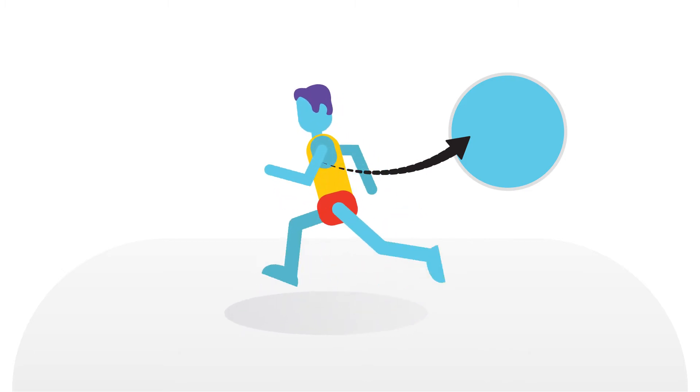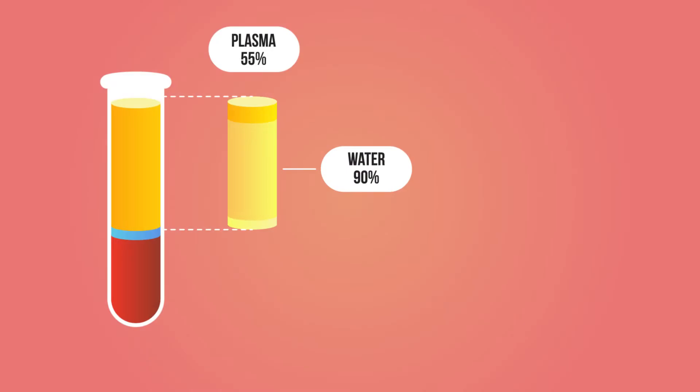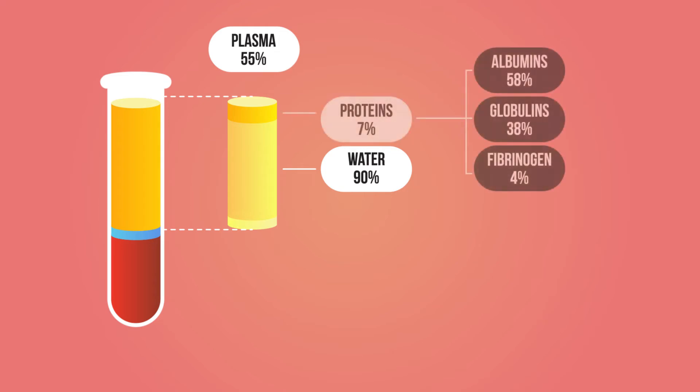Plasma also transports heat throughout the body and can even help with heat loss. As well as being 90% water, plasma is 7% proteins.